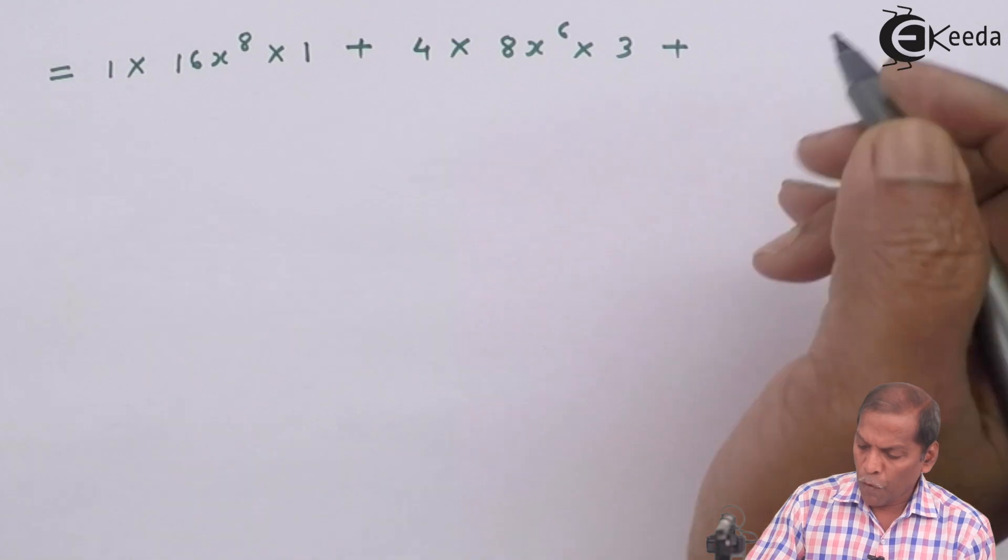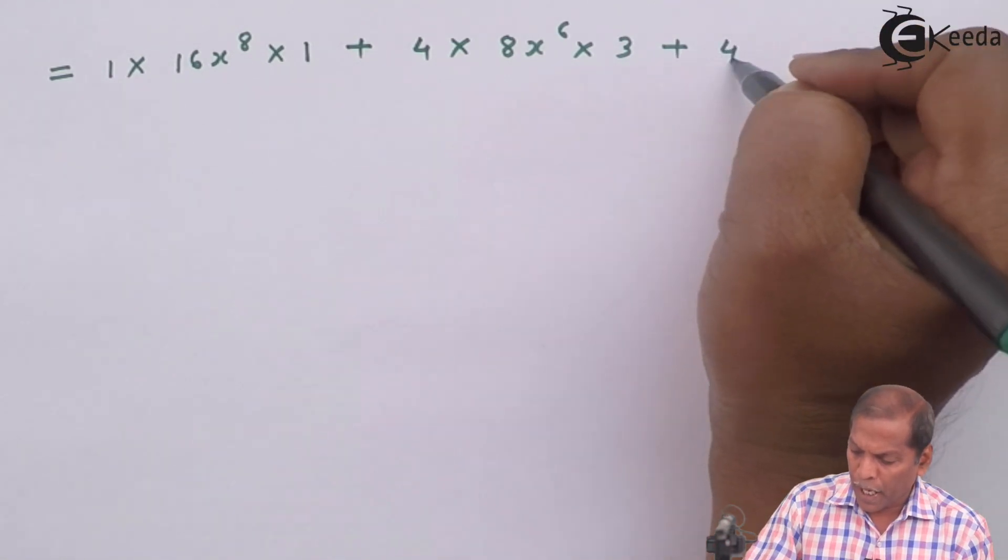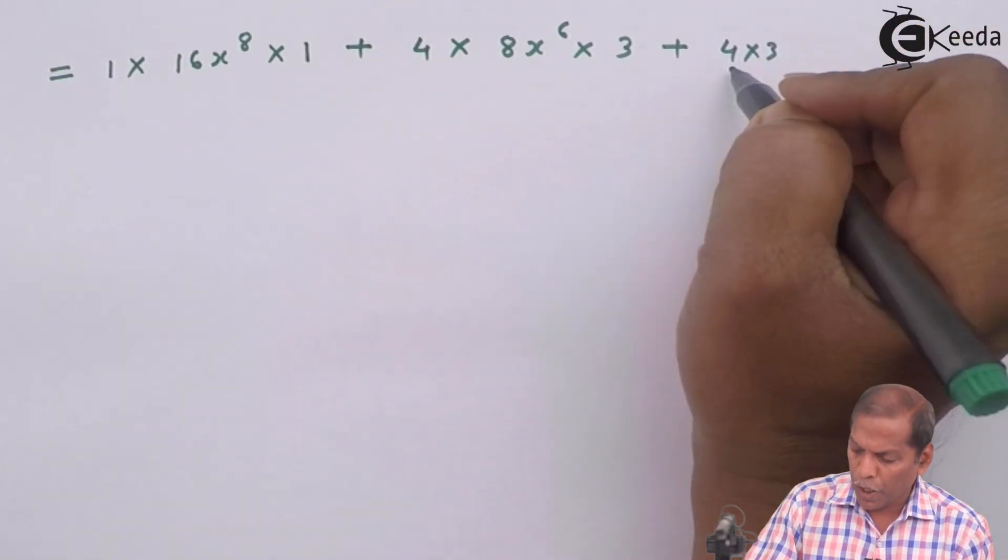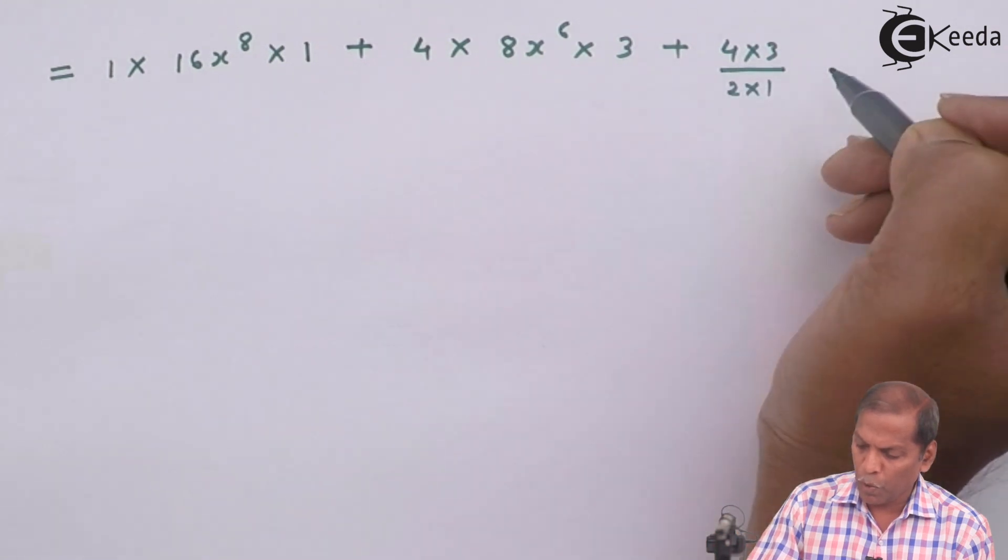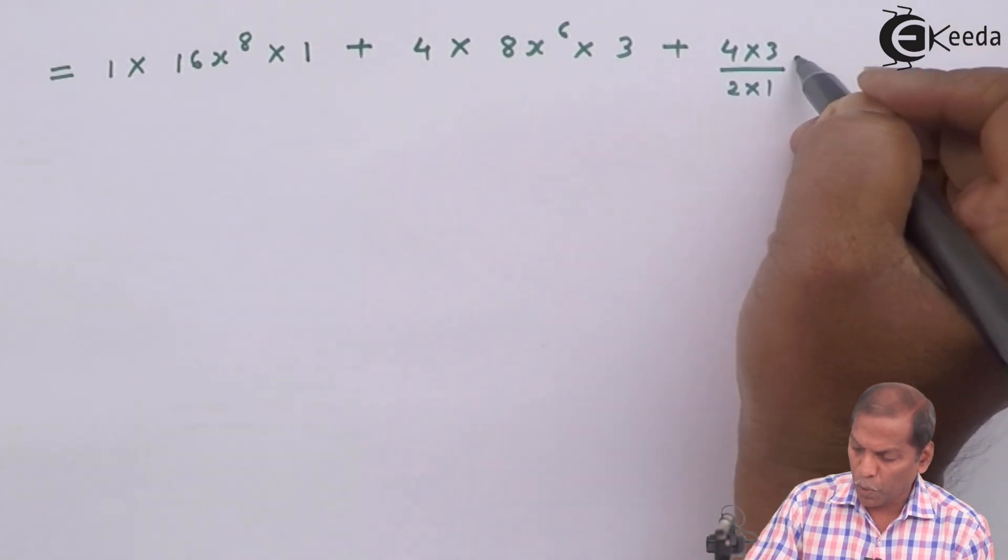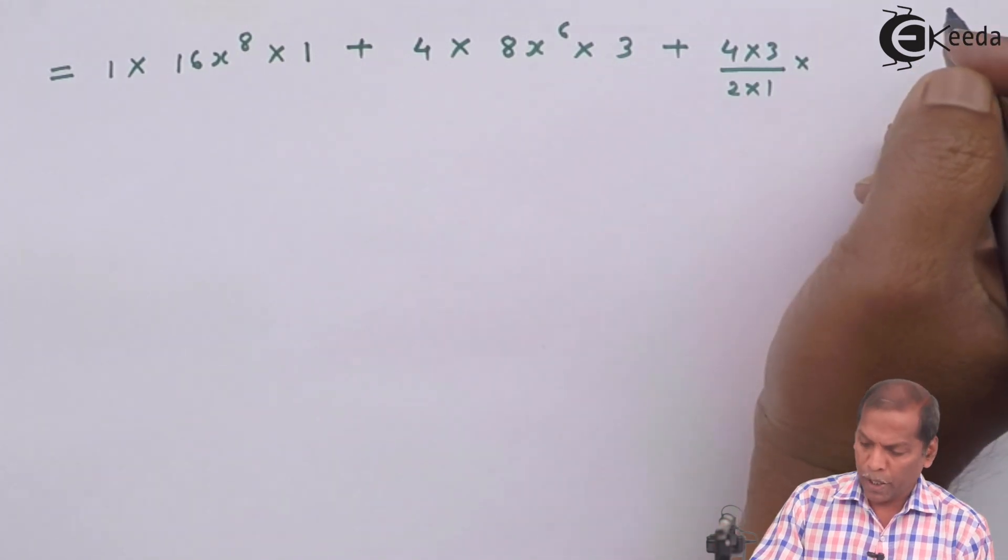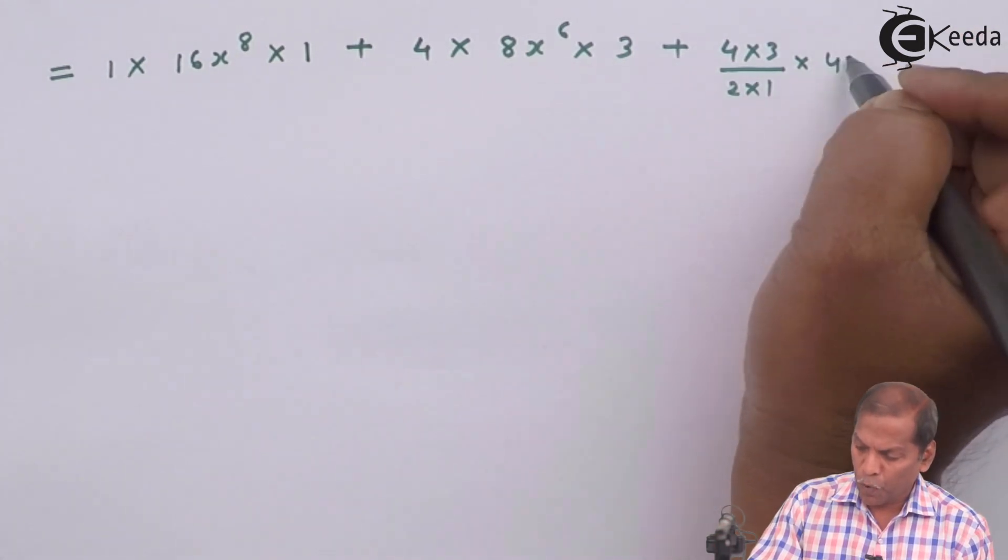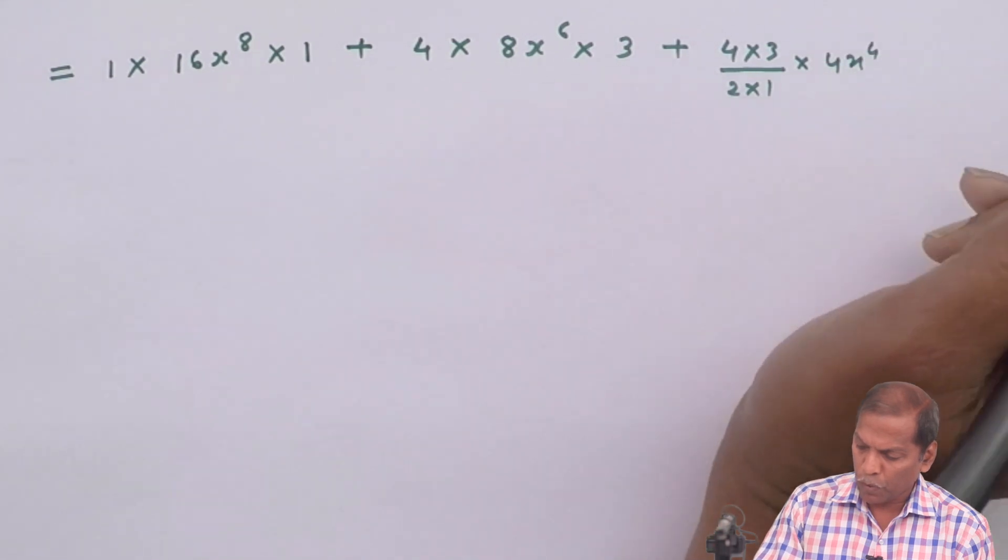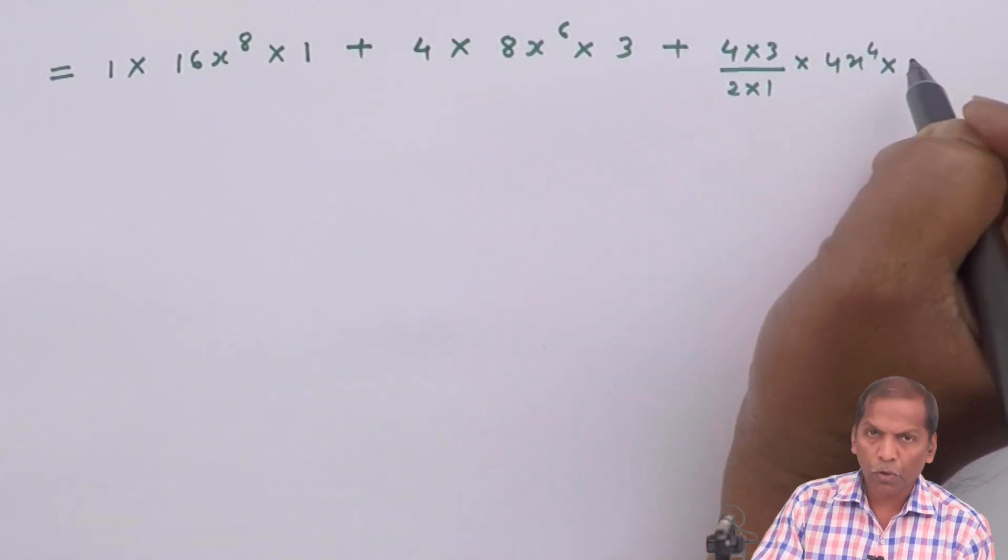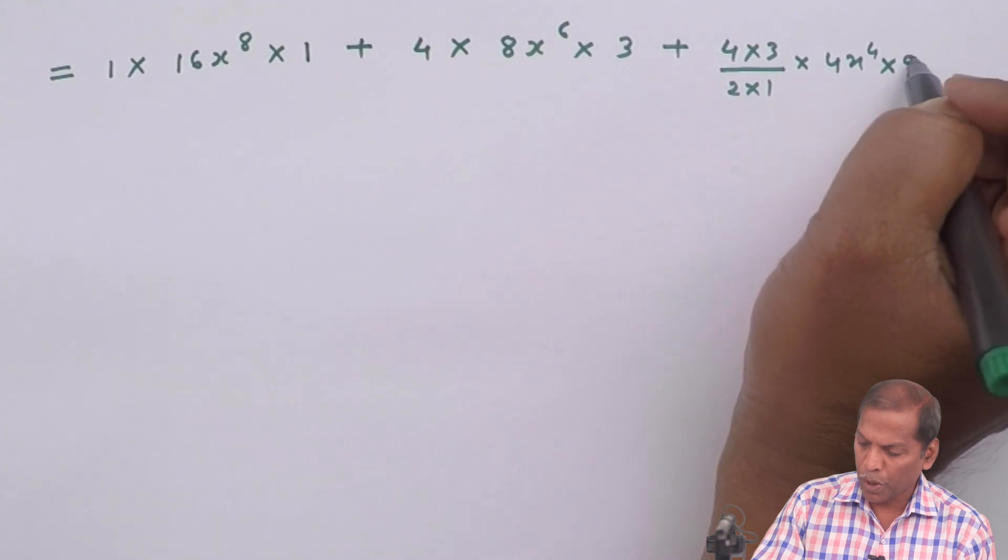now ⁴C₂ can be calculated as 4×3/(2×1) times (2x²)² so that gives us 4x⁴ times 3² gives 9